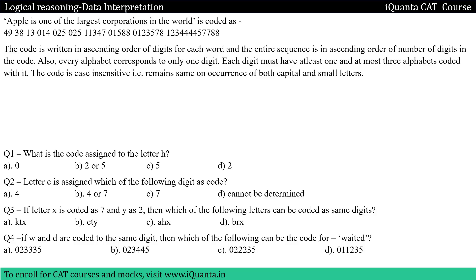The question is: 'Apple is one of the largest corporations in the world' is coded as 49, 38, 13, 014, 025 and so on. The code is written in ascending order of digits for each word. So whatever code we have written for every word, in that the digits are in ascending order.